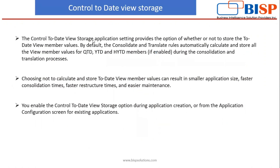So what is the control to date view storage feature? The control to date view storage application setting provides the option of whether or not to store the two date view member values. By default, when you run the consolidation and translate rules, it automatically calculates and stores all the value view members for QTD, YTD, and HYTD members if they are enabled during the consolidation and translation process. But by enabling this feature, the values will not be stored in QTD, YTD, and HYTD members. Instead, they will be stored in QTD rule, YTD rule, and HYTD rule members.